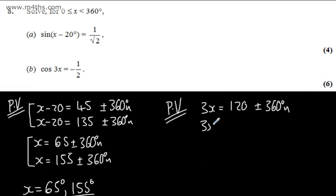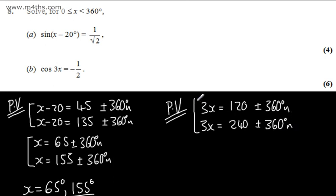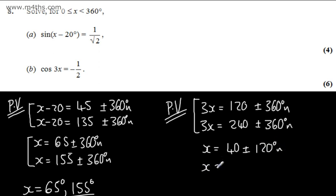By symmetry, we also have 360 minus 120, which gives 240 degrees, plus or minus multiples of 360 degrees. At this stage, we divide both equations by 3. So x equals 40 degrees plus or minus multiples of 120 degrees, and x equals 80 degrees plus or minus multiples of 120 degrees.